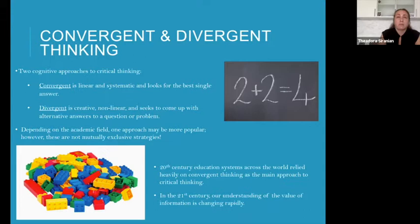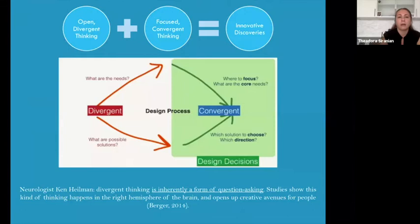In the 20th century, especially in the West, educational systems began to rely heavily on convergent thinking as the main approach to critical thinking and to education. That's changed a lot in the 21st century and is continuing to change exponentially because our entire understanding of the value of information is changing. I wanted to give you a couple more visuals in thinking about the way you can use divergent and convergent thinking together.